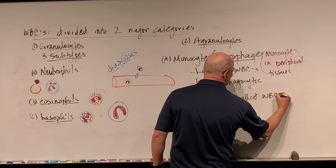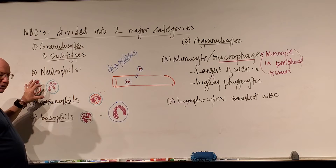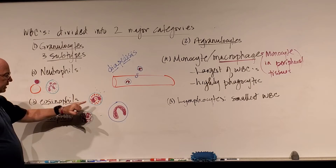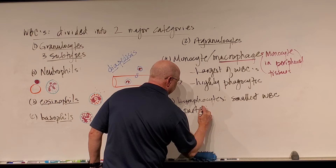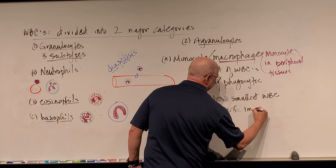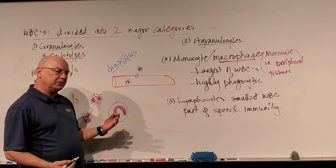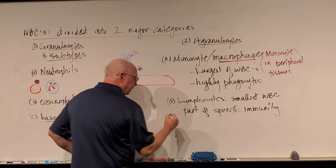Lymphocytes are the smallest white blood cell in size. Neutrophils, eosinophils, and basophils are all slightly larger than a red blood cell, but lymphocytes are not — they're pretty small. Macrophages and monocytes are huge. Lymphocytes are almost entirely nucleus, and they are part of what we call the specific immune system — also called acquired immunity or adaptive immunity.